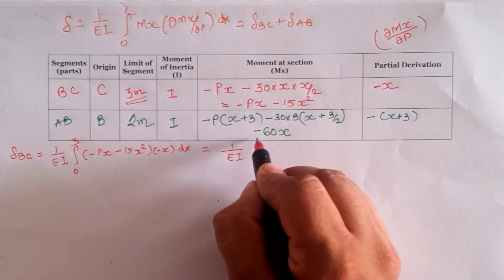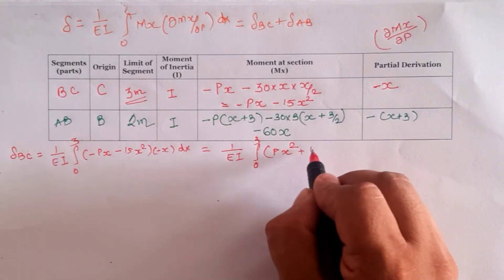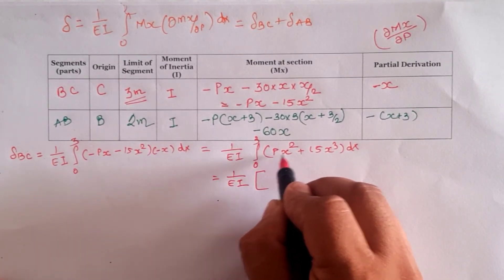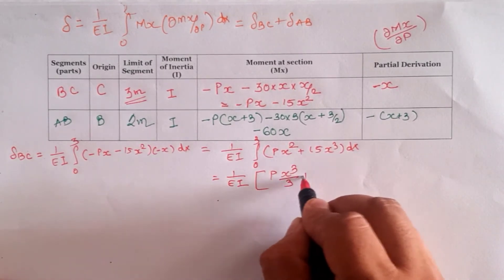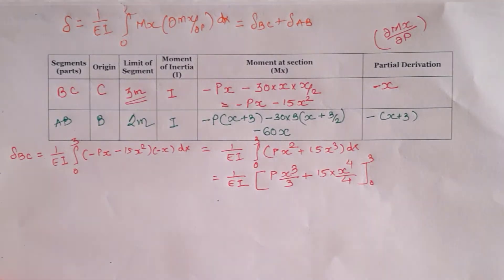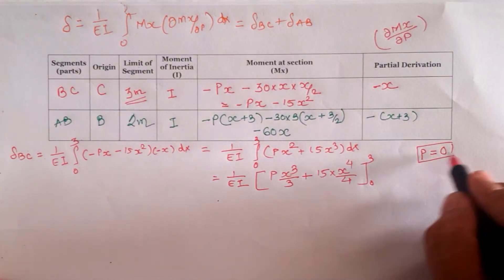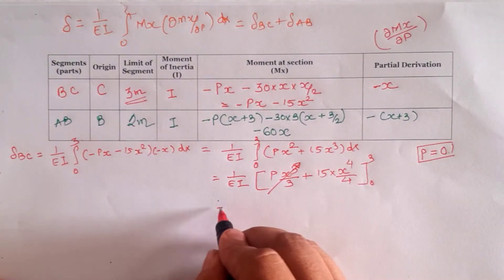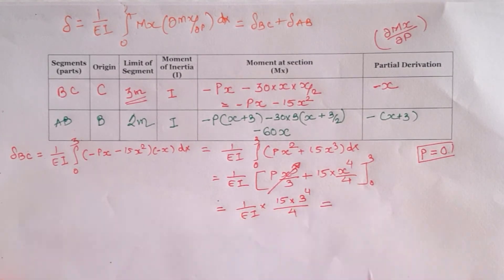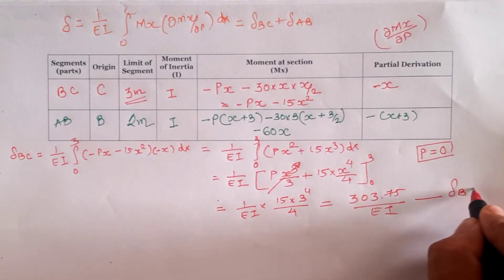Expanding the integrand for B to C: (1/EI) ∫₀³ [Px² + 15x³] dx. Integrating: Px³/3 + 15x⁴/4. Since the arbitrary load P = 0 (no point load at C), the term with P is eliminated. The result is (1/EI) × 15 × (3⁴/4) = 303.75/EI, which is δ_BC.